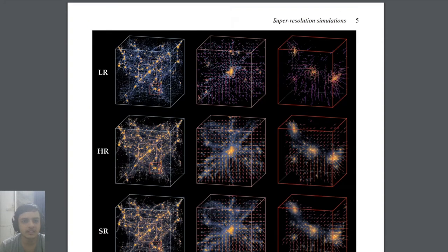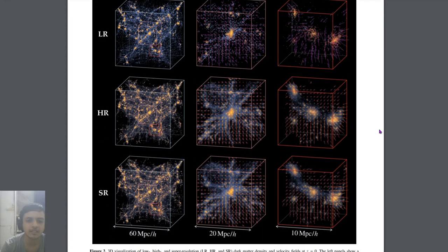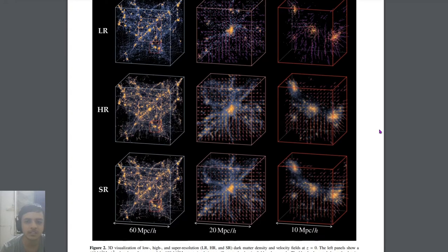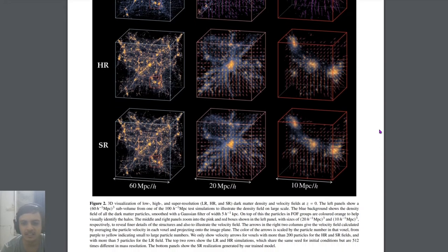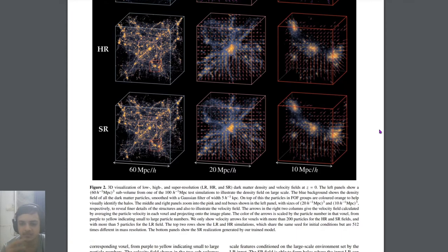This is the results. As you can see, this is the low resolution, high resolution, and super resolution. These are the three dark matter only N-body simulations that were done at varying zoom levels - 60 megaparsecs, 20, and 10.